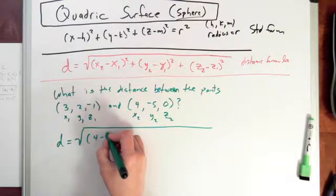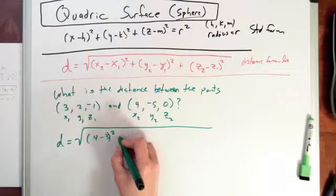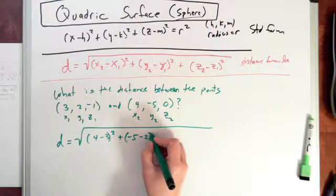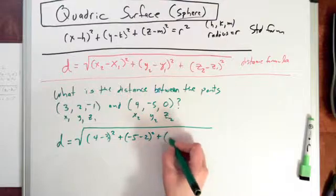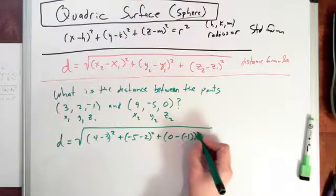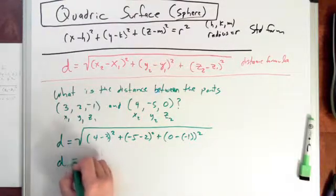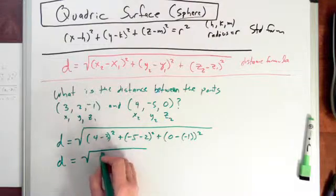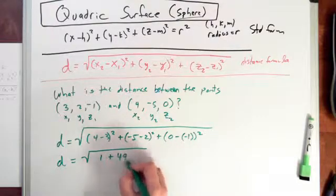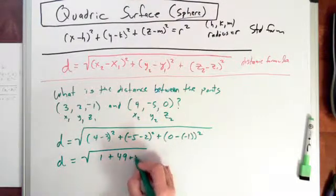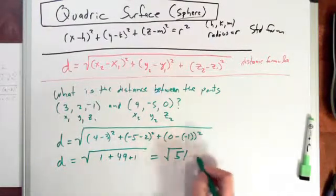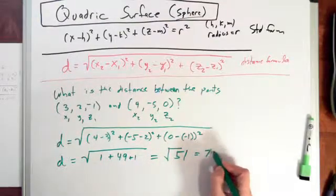(4 minus 3) squared plus (-5 minus 2) squared plus (0 minus negative 1) squared. This equals 1 plus 49 plus 1, which equals the square root of 51, which equals 7.14.